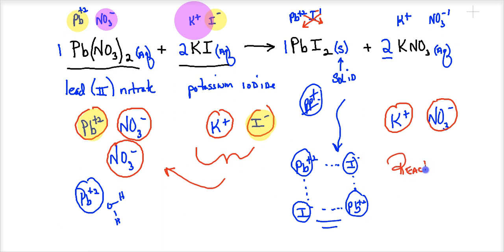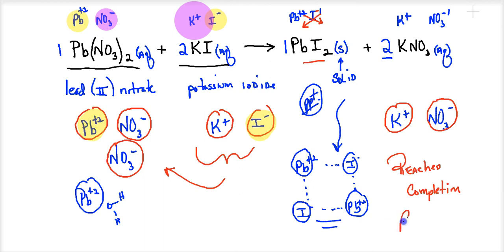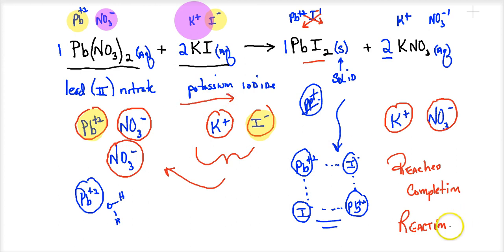What does 'reached completion' mean? If you make a precipitate, the reaction can't go in reverse — those ions are locked in the solid, so the reaction keeps going forward until it's complete. Another way to think about it: if there were no precipitate and you had free ions on both sides, nothing would happen. But because one ion pair is locked up, the reaction is driven to the right. So if you make a precipitate, you have reached completion and a reaction has occurred.